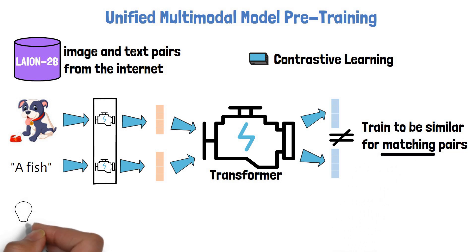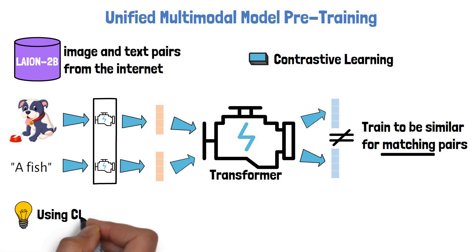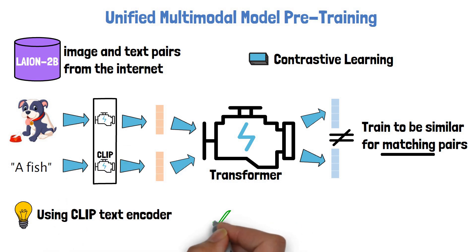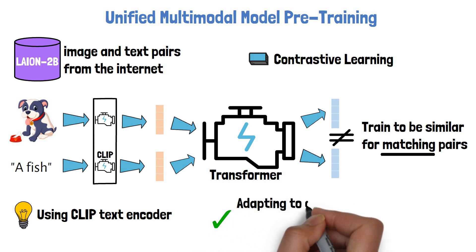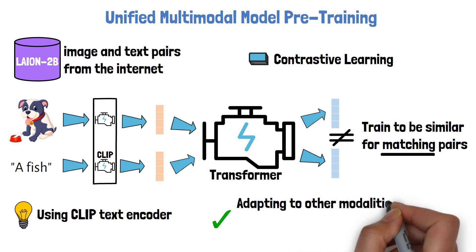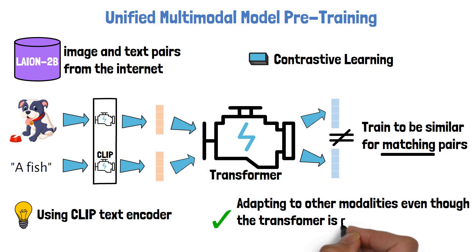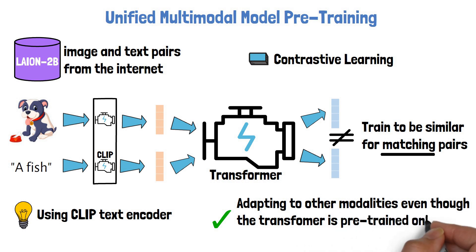A very important note is that they do not start from scratch here either — they actually use CLIP as the text encoder. CLIP is a pre-trained model that connects text and images, so its embeddings already grasp the semantic meaning of text. Overall, it is very interesting that this pre-trained model was able to adapt to other modalities, since it was only trained on text and images, and the only adaptation process is training the other modalities' tokenizers to yield input embeddings in the same space that the model saw in pre-training.